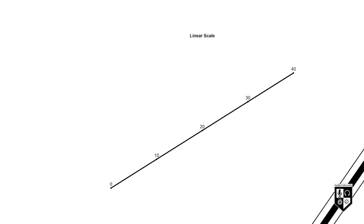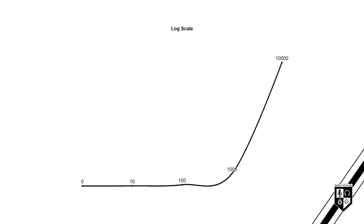In a linear scale, each step is the same size — for example, 10, 20, 30, 40, where each step is an addition of 10. In a logarithmic scale, each step has the same proportion — 10, 100, 1,000, 10,000, where each step is multiplied by 10. As sound pressure increases, more and more power is required to create the same perceived increase in loudness.